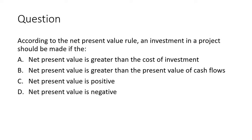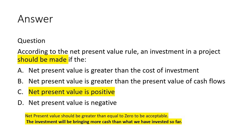Question: According to the Net Present Value rule, an investment in a project should be made if the — (a) net present value is greater than cost of investment, (b) net present value is greater than the present value of cash flow, (c) net present value is positive, (d) net present value is negative. The answer is that NPV should be greater than or equal to 0 to be acceptable. The first choice relates to IRR, not NPV. The correct interpretation is that the present value of future cash flows minus the amount invested should be positive.